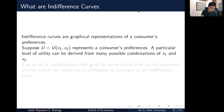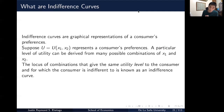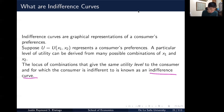The indifference curve functions similarly. It's derived from a utility function in that we hold a particular level of utility constant while drawing combinations of different goods that yield that same utility. So suppose we have a utility function representing a consumer's preference — a particular level of utility can be derived from many possible combinations of x1 and x2. The locus of points giving the same utility level, to which the consumer is indifferent, is known as an indifference curve.